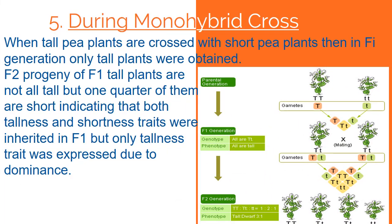During Monohybrid Cross: when tall pea plants are crossed with short pea plants, then in F1 generation only tall plants were obtained. F2 progeny of F1 tall plants are not all tall — one quarter of them are short, indicating that both tallness and shortness traits were present in F1 but only the tallness trait was expressed due to dominance.